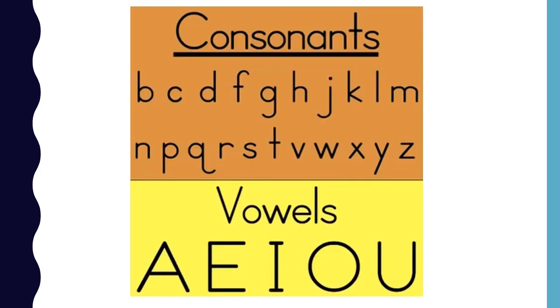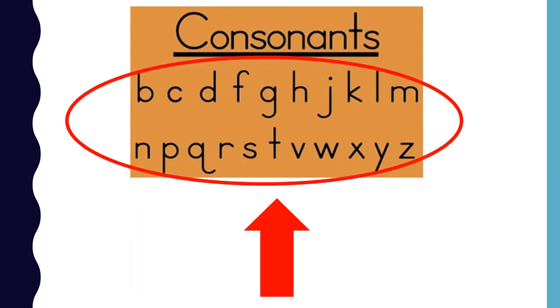The alphabet has two types of letters: consonants and vowels. These letters are called consonants. When you say the sound of consonants, the airflow out of your mouth is interrupted. This means that your mouth opens and closes when it says the sounds of all consonant letters.